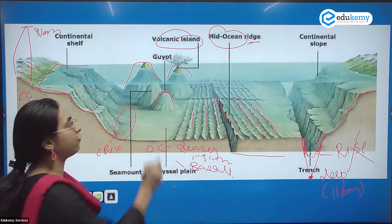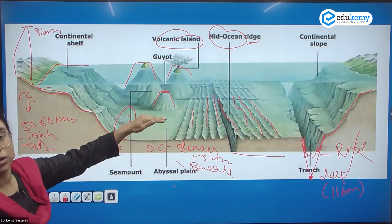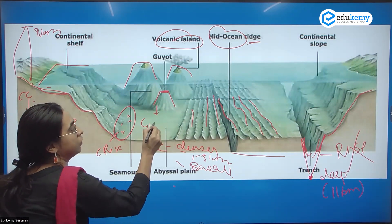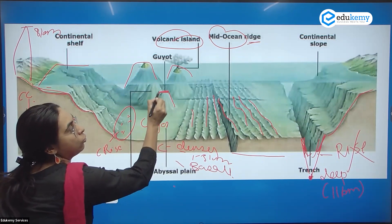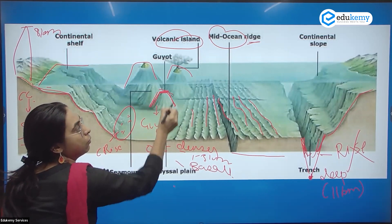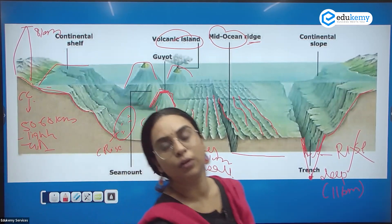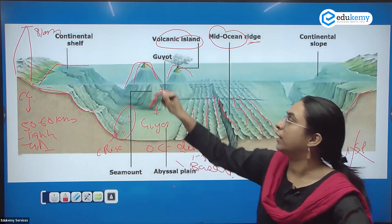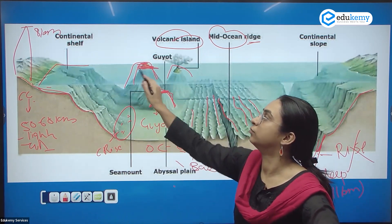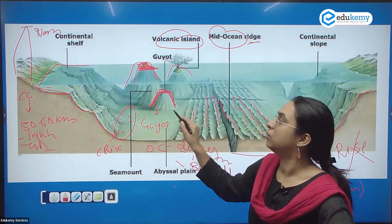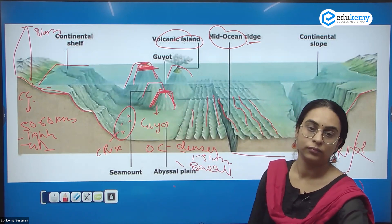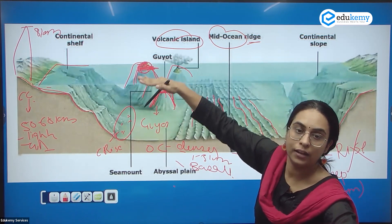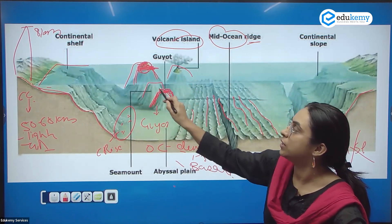Certain sea mounts are well under the water and have a flat top. A sea mount or volcanic ocean island with a flat top that does not reach the water surface is called a guyot. What happens is a volcanic island over time gets eroded, the top becomes flat, and it reduces in height, becoming a guyot.